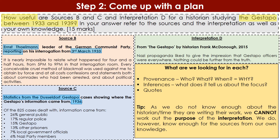For interpretation D, the provenance is slightly less useful. You have that it's from a book called 'The Gestapo' by historian Frank McDonough, written in 2015. We don't know enough about the historian or the time they are writing to work out the purpose of this interpretation, and 2015 is not particularly relevant to our understanding of living under Nazi rule. So the provenance for interpretation D is important to be aware of, but you don't need to forensically analyse it to the same level as sources B and C.